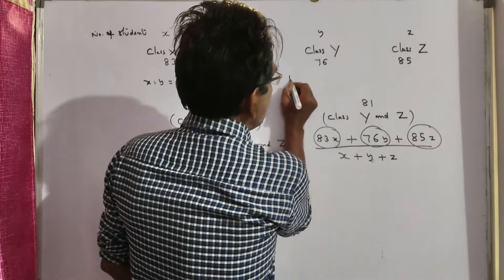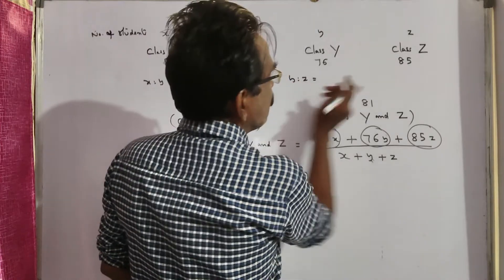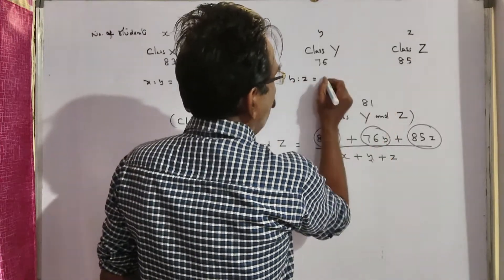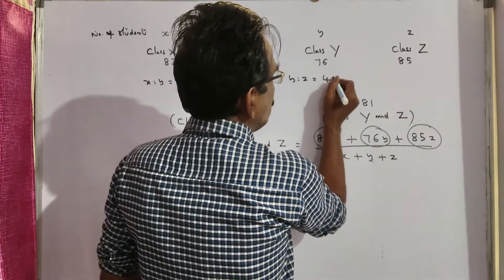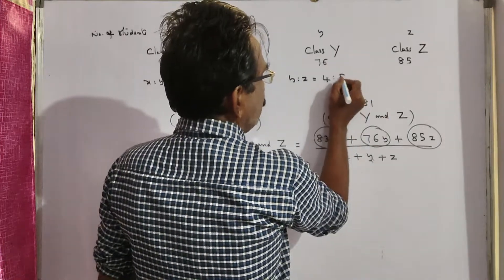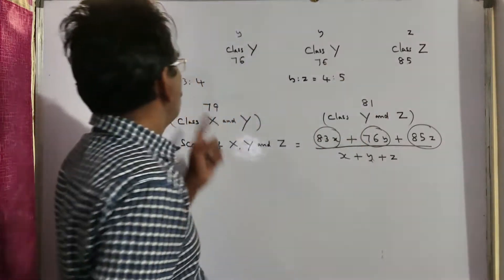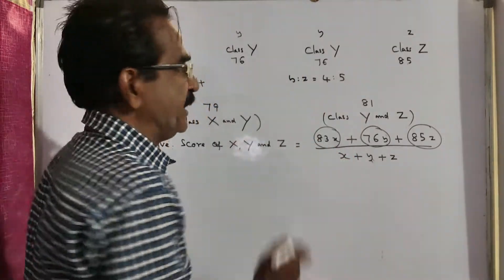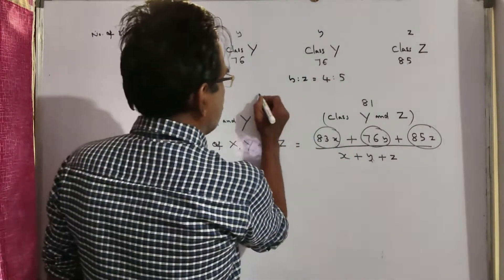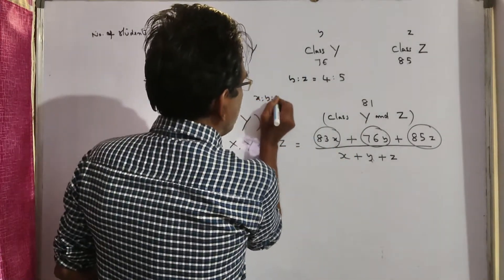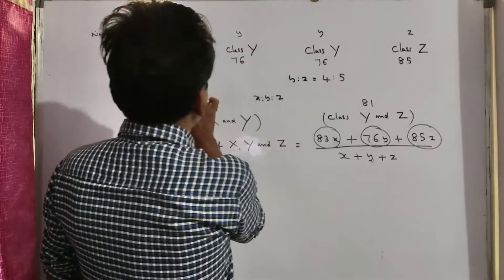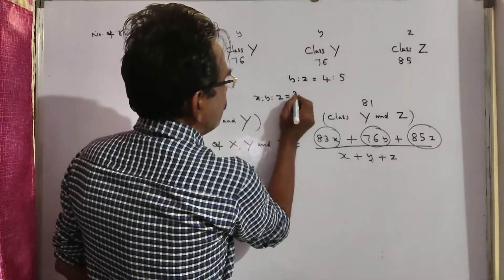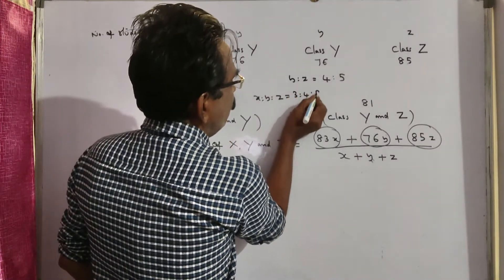Here, Y is to Z is equal to: this minus this gives 4, this minus this gives 5. So Y is to Z equals 4 is to 5. Now you know X is to Y and you know Y is to Z. You can find X is to Y is to Z. X is to Y is to Z is equal to 3 is to 4 is to 5.